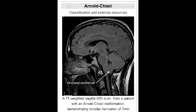What is the most common cause of cerebellar tonsillar herniation? Cerebellar tonsillar herniation is most commonly caused by Chiari malformation, and this often presents with progressive hydrocephalus or syringomyelia.